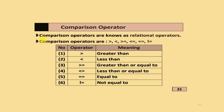Comparison operators compare different values and are also known as relational operators. These include: greater than (>), less than (<), greater than or equal to (>=), less than or equal to (<=), equal to (==), and not equal to (!=).